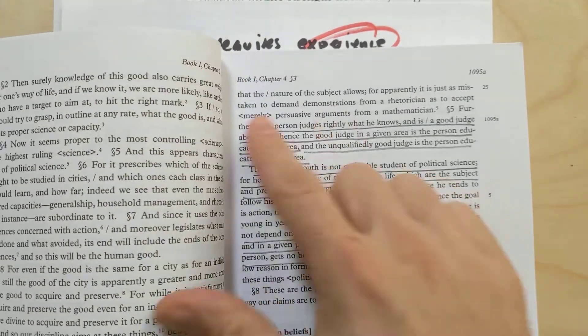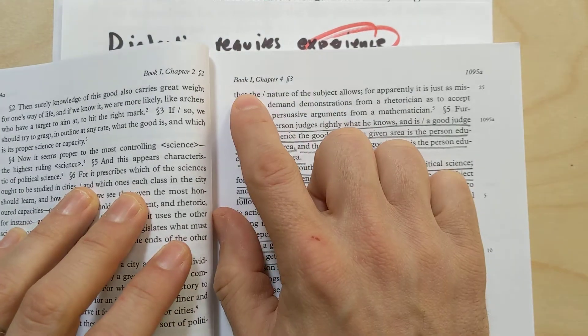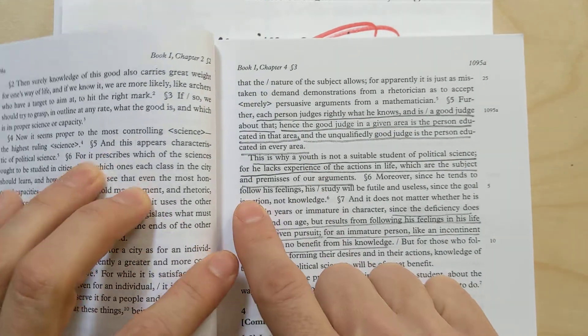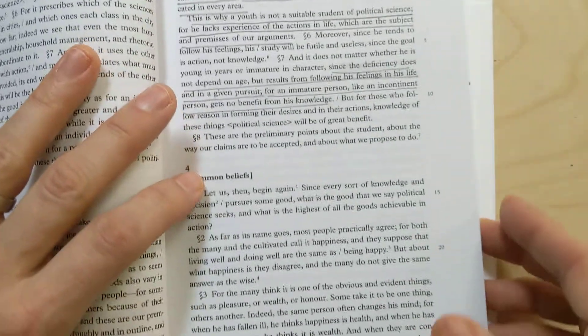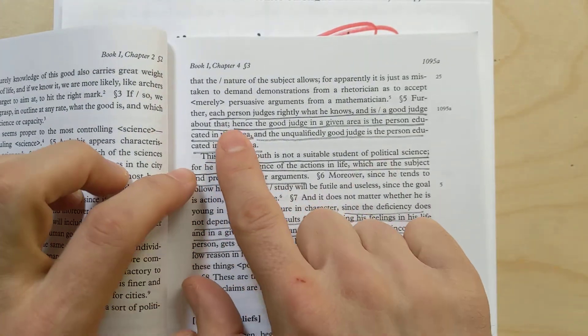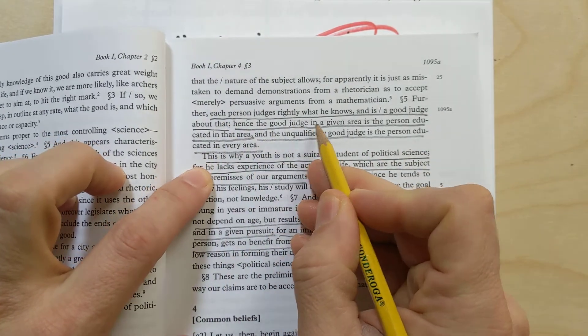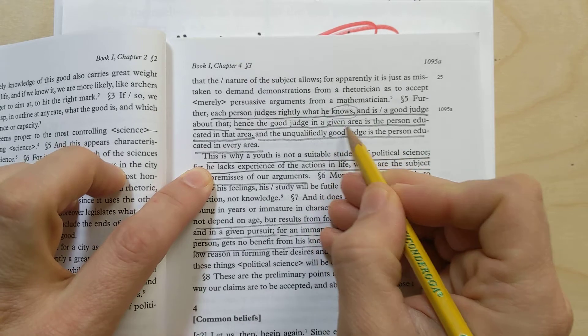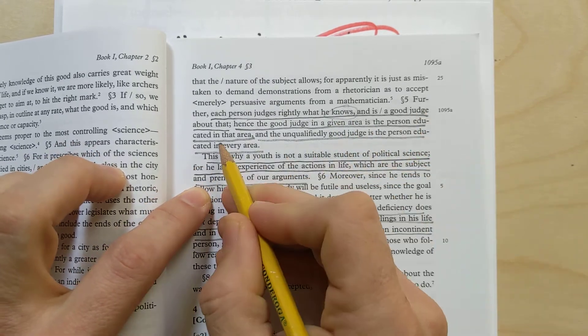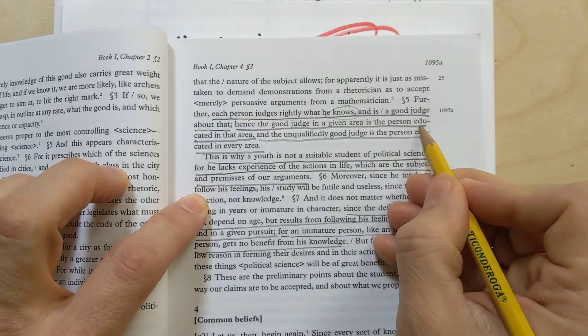Here we're actually back into book one, which is now technically one of the readings for this particular week. We're looking at book one, chapter three. If you're working out of the third edition of Erwin, it's only page three. So here we see a couple of important things. First, Aristotle says, furthermore, each person judges rightly what he knows, and is a good judge about that. Hence, the good judge in a given area is the person educated in that area.